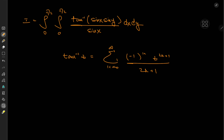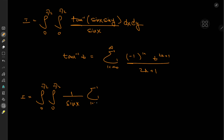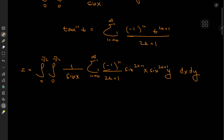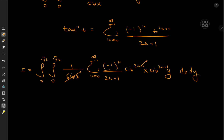In our case, we have z equal to sine x times sine y, so I'll plug this into the integral. We have the double integral from 0 to pi over 2, times 1 over sine x, times the sum over k from 0 to infinity of negative 1 to the k over 2k plus 1 times sine to the 2k plus 1 of x times sine to the 2k plus 1 of y, dx dy. And we do have some cancellation taking place because of the sine term.